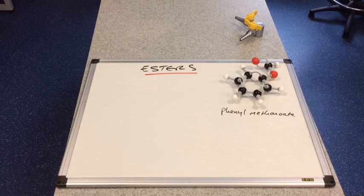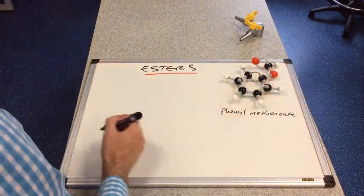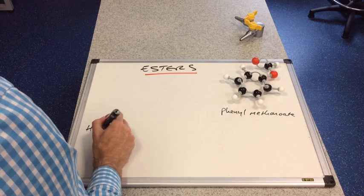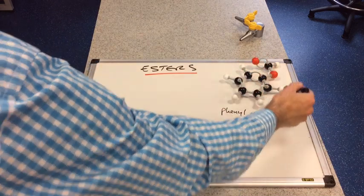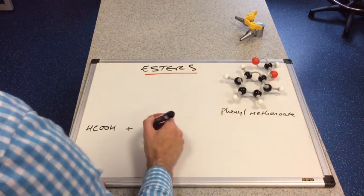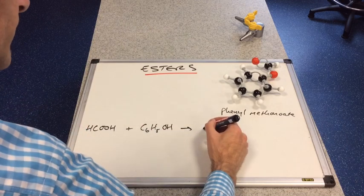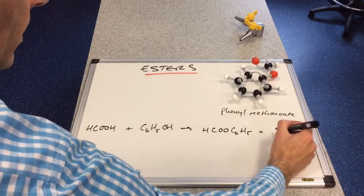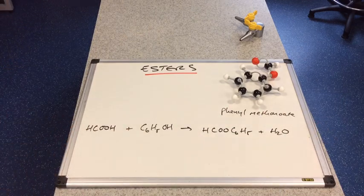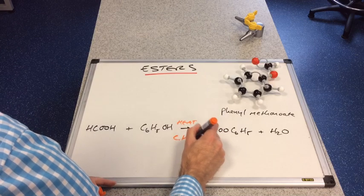Now let's look at phenyl methanoate. The carboxylic acid provides the carbonyl part of the molecule, so that's methanoic acid (HCOOH). The alcohol providing the phenyl group is phenol (C₆H₅OH). The reaction produces HCOOC₆H₅ and water, and again requires heat and a concentrated sulfuric acid catalyst.